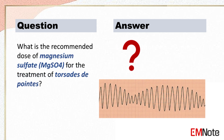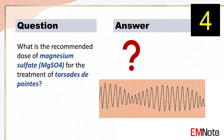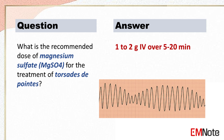What is the recommended dose of magnesium sulfate for the treatment of torsades de pointes? The recommended dose of magnesium sulfate for the treatment of torsades de pointes is 1 to 2 g intravenously over 5 to 20 minutes.